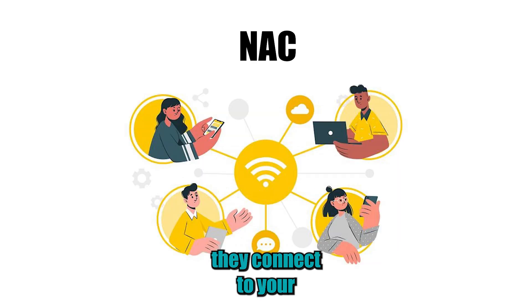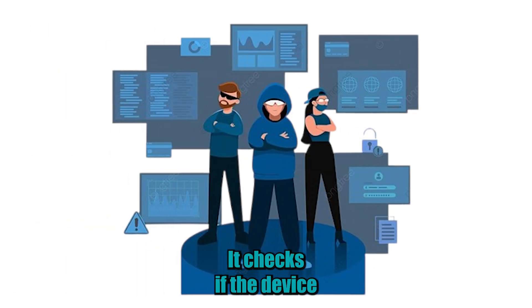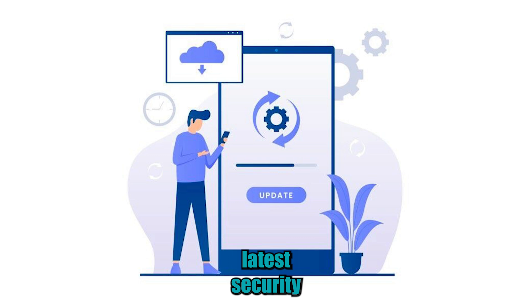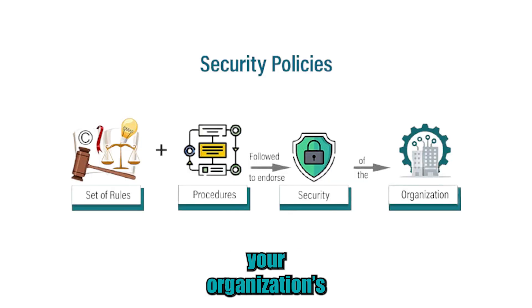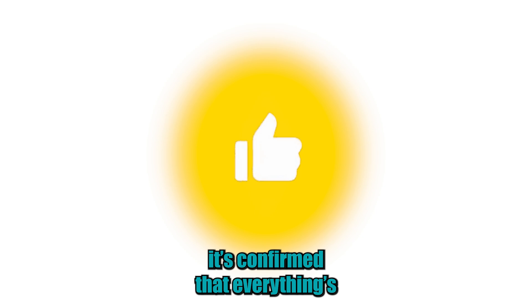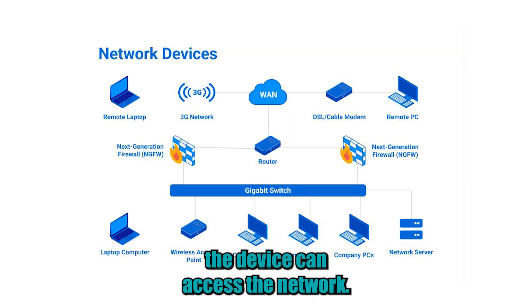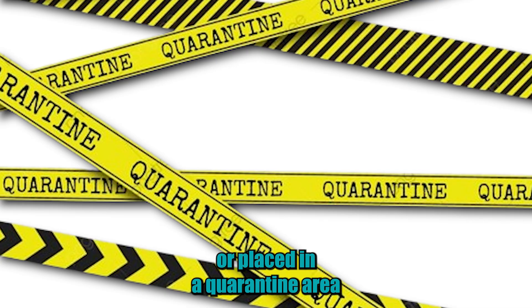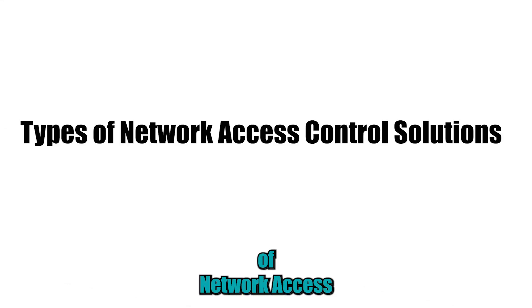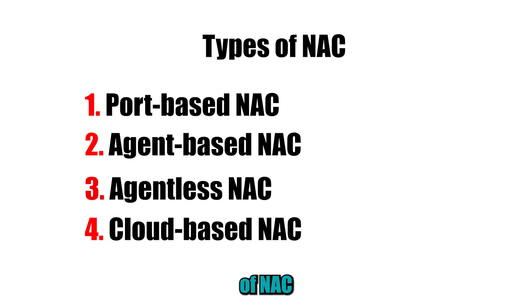How does network access control work? NAC works by verifying devices before they connect to your network. It checks if the device has the latest security updates, whether it has antivirus software installed, and even if it follows your organization's security policies. Once it confirms that everything is good, the device can access the network. If not, the device is either denied access or placed in a quarantine area until the issue is fixed.